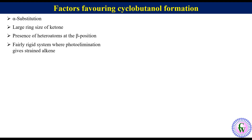For example, compound 1. It has two methyl substituents at the alpha carbon. So upon irradiation it will give the cyclobutanol derivative as the major product.